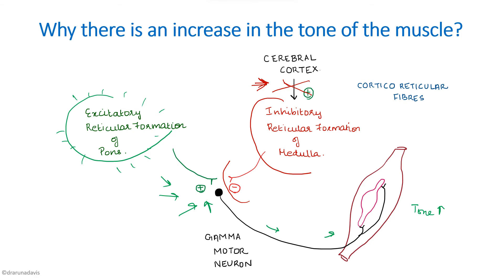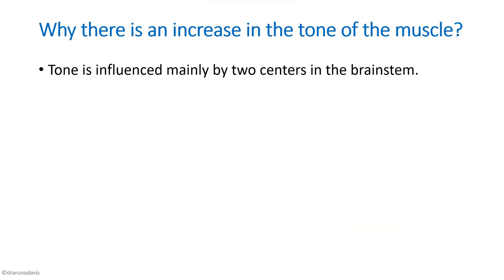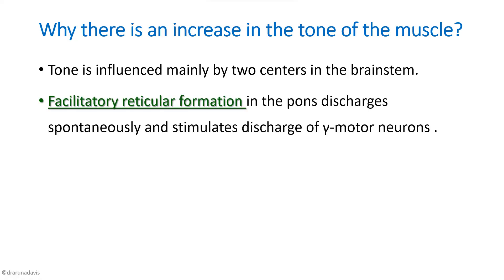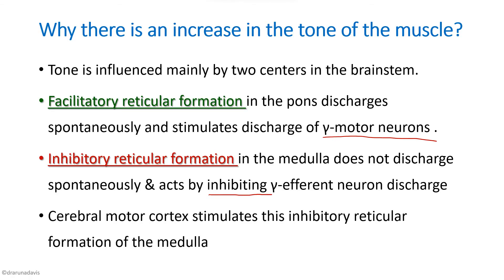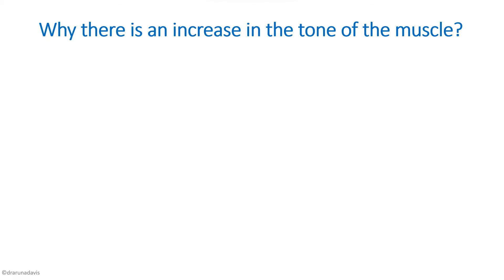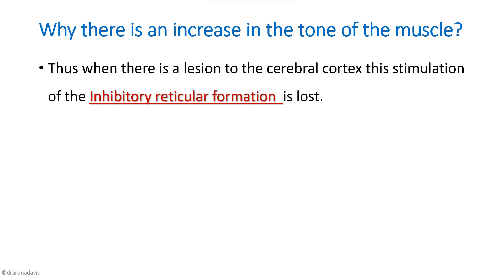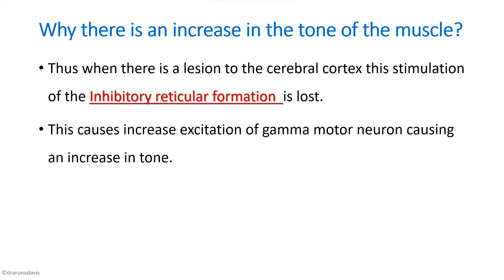For the written answer: tone is influenced by two centers in the brainstem. One is the facilitated reticular formation in the pons, which discharges spontaneously and stimulates gamma motor neuron discharge. The other is the inhibitory reticular formation, which does not discharge spontaneously but inhibits gamma efferent discharge. The cerebral cortex stimulates this inhibitory reticular formation of the medulla. Thus, when there is a lesion in the cerebral cortex, stimulation of the inhibitory reticular formation is lost, causing increased excitation of the gamma motor neuron and hypertonia — this is the reason for hypertonia in pyramidal tract lesions.